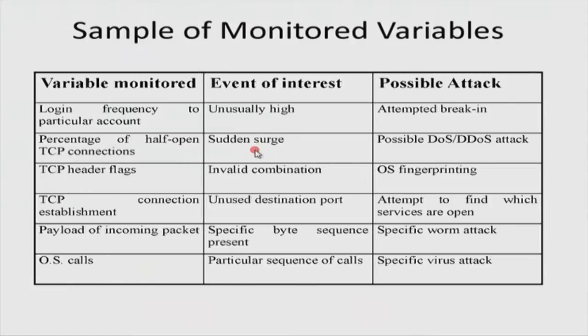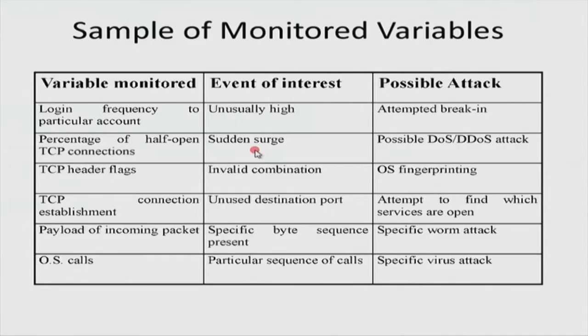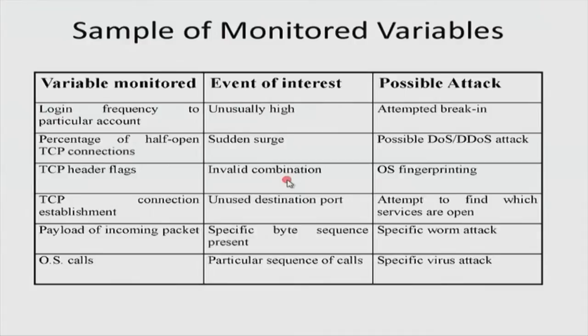You might monitor the percentage of half-open TCP connections. A sudden surge in half-open TCP connections compared to the normal number suggests a possible DoS or DDoS attack onset. You might also monitor combinations of TCP header flags in incoming packets, looking for invalid or very strange combinations of those six flags, which might suggest an attacker trying to fingerprint the operating system on your machine.